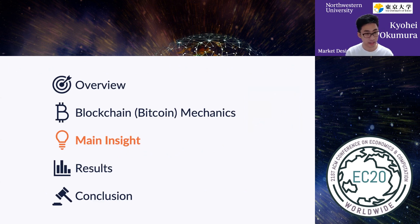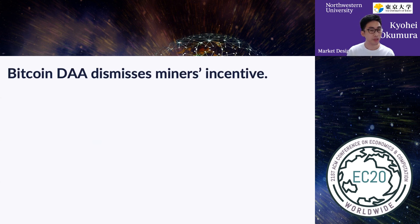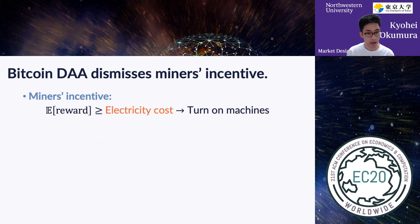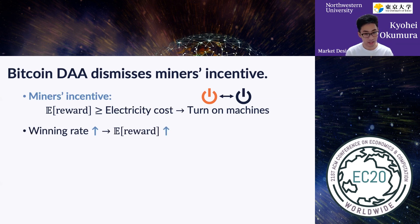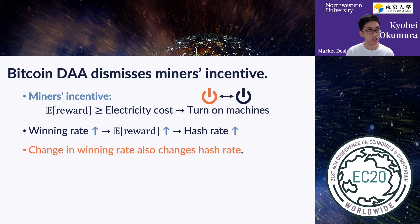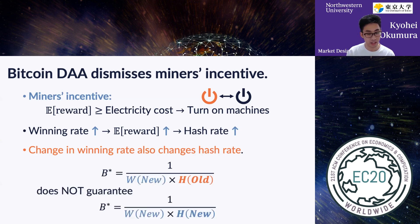Our primary finding is that Bitcoin DAA dismisses miners' incentive. Miners' incentive works as follows: in order to draw a lottery, they compute a hash value using their computer, and in order to do so, they pay electricity cost. So miners turn on their machines only when the expected reward is larger than the cost. If the winning rate increases, the expected reward also increases, so more and more miners turn on their machines, and as a result, hash rate goes up. The point is that the change in winning rate also changes the hash rate, so this update rule does not guarantee that the equation still holds after the hash rate changes.